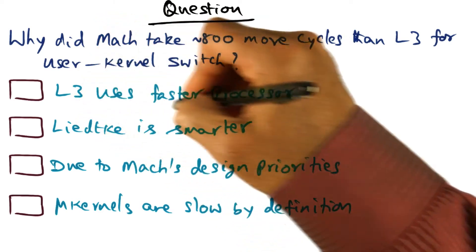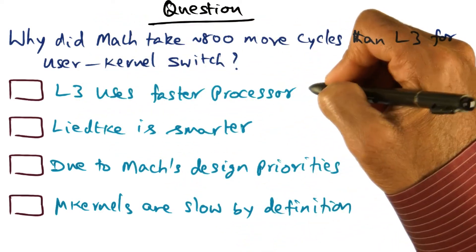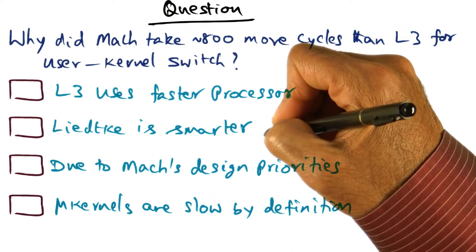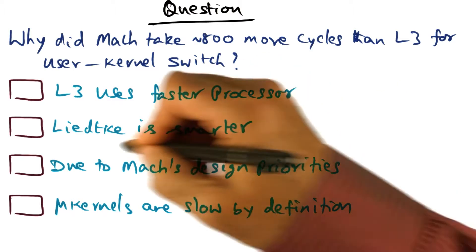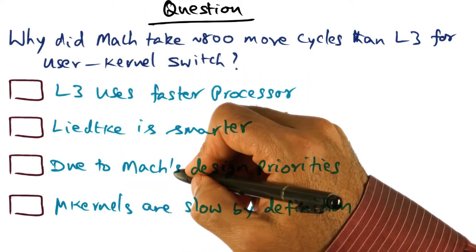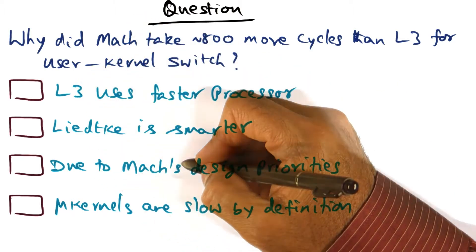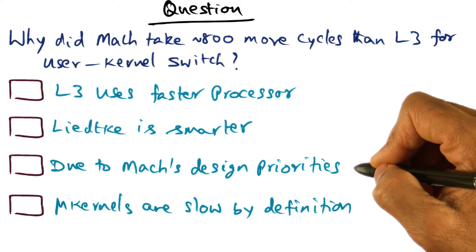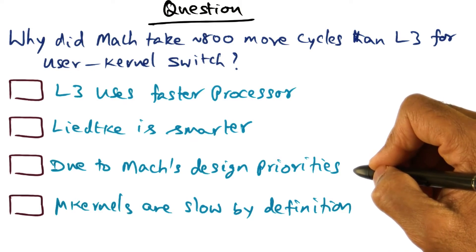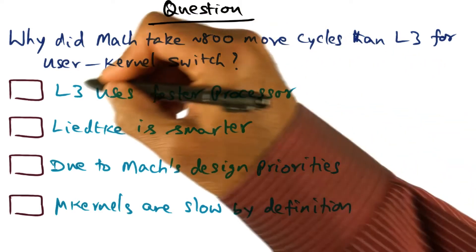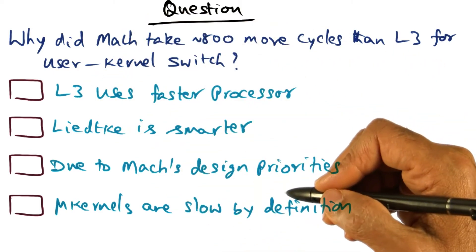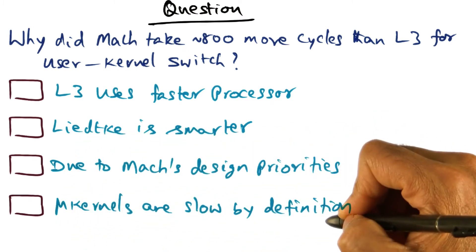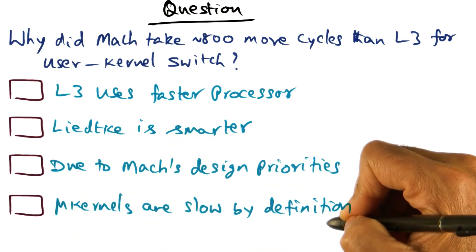Is it because L3 uses a faster processor? Is it because Liedtke is smarter? Liedtke, as you know, is the author of the L3 microkernel. Is it because Mach's design priorities are different from L3 microkernel's? Or is it because microkernels are slow by definition?